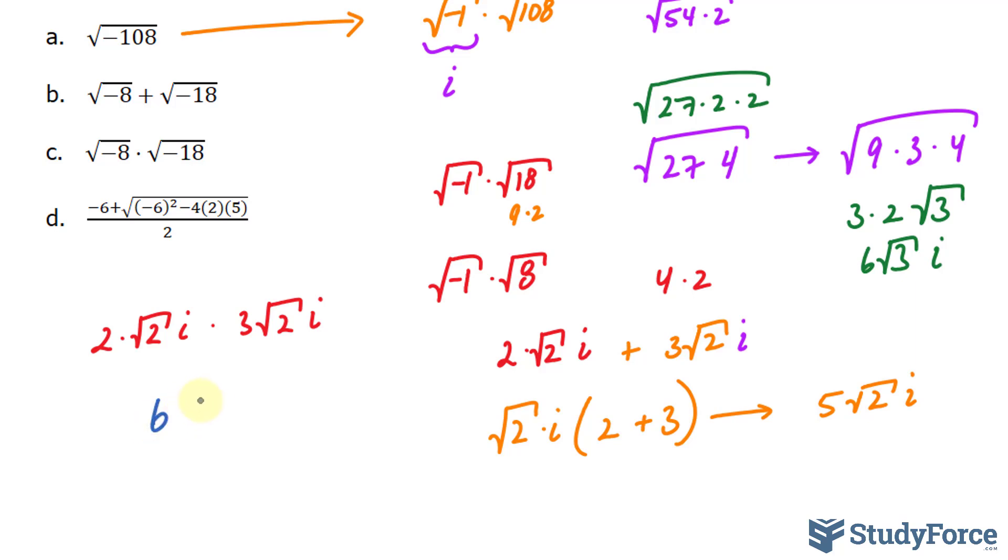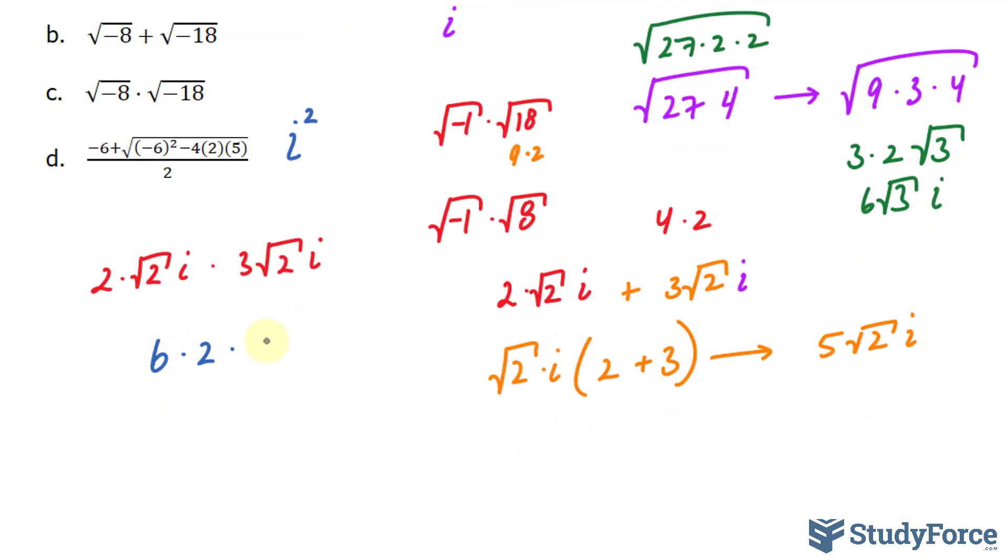Multiplying these out, 2 times 3 is 6. The square root of 2 times the square root of 2 is 2. And i times i, that's like saying i squared, which happens to equal negative 1.